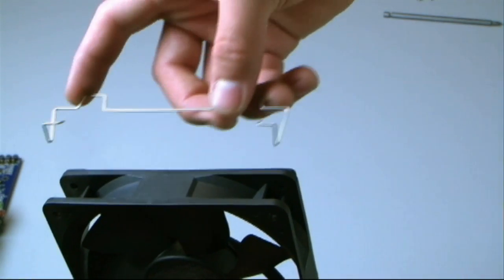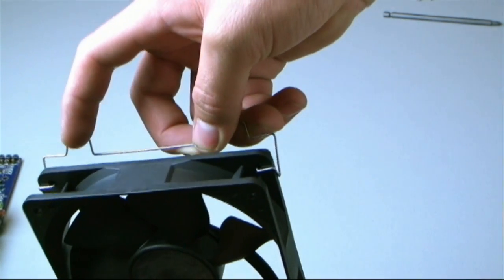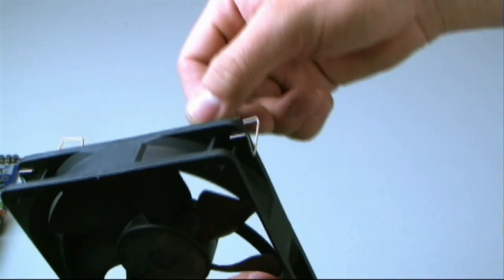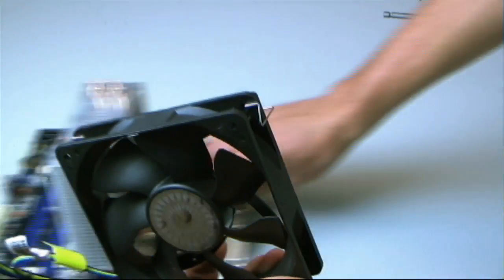To secure the fan onto the heat sink, you're going to need these clips right here. Simply clip it onto the bottom holes of the fan, like so. And then you can begin mounting it to the cooler.